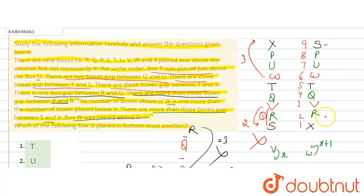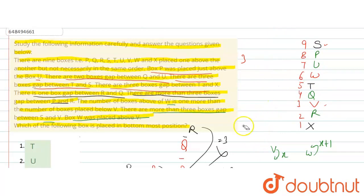In the valid case, S is here and V is there, with more than 3 boxes gap between them. So the wrong case is eliminated, and this is the final arrangement.